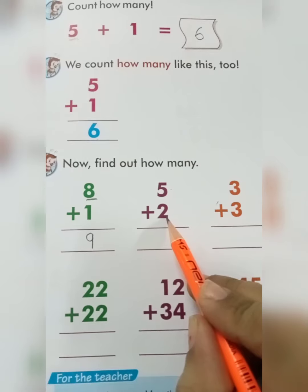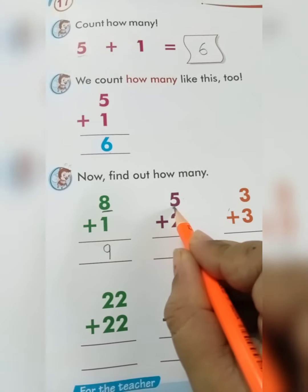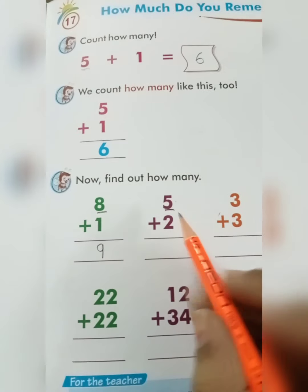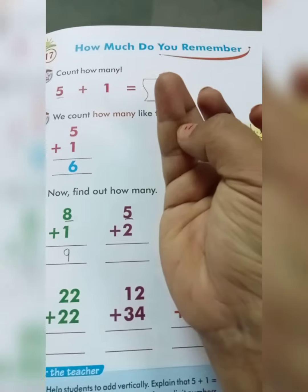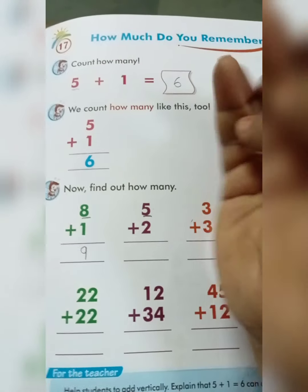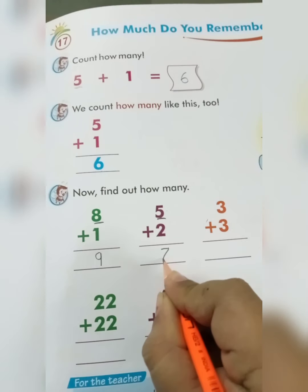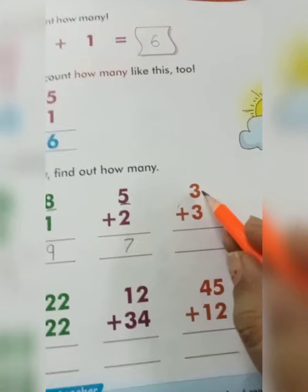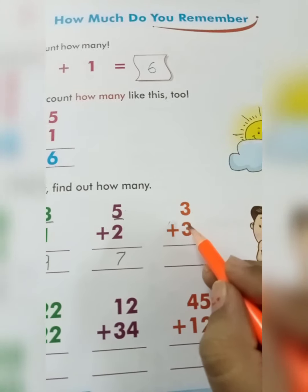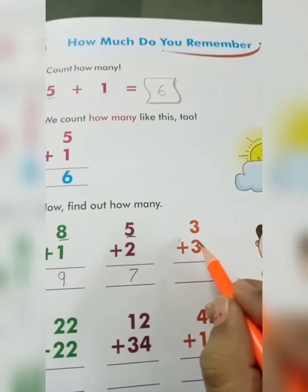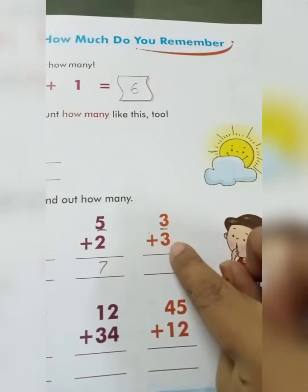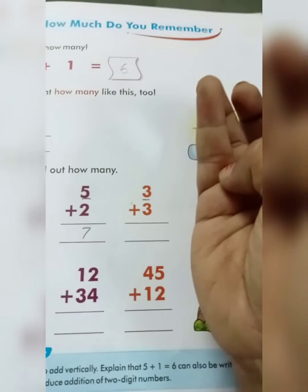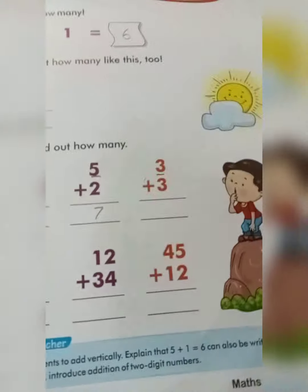Second: 5 plus 2. Which one is big? Yes, 5. So underline the 5. Another number is 2 — means हमें 2 blocks add करने हैं 5 में. So 5 after: 6, 7. So our answer is 7. Now 3 plus 3. Students, इसमें same number है — दोनों same हैं, कोई big नहीं कोई small नहीं. तो हम एक number में underline करेंगे, और दूसरा number blocks count करेंगे. So 3 after: 4, 5, 6. Our answer is 6.